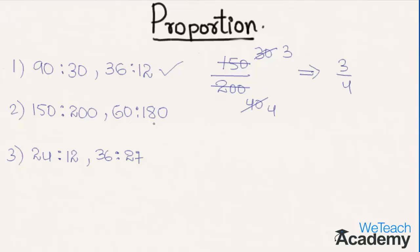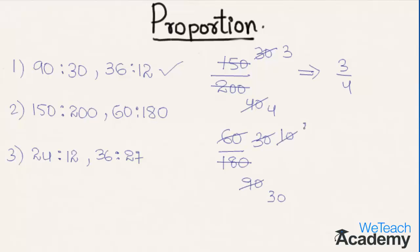Now the ratio 60 is to 180 can be written as 60 divided by 180. Simplifying: 2 times 30 is 60 and 2 times 90 is 180. Further simplifying, 3 times 10 is 30 and 3 times 30 is 90. Then 5 times 2 is 10 and 5 times 6 is 30, giving us 1 by 3. So both ratios are not in proportion as we get different values.